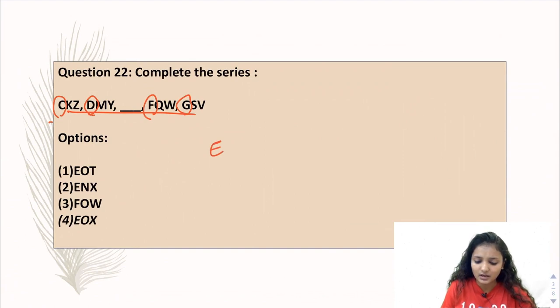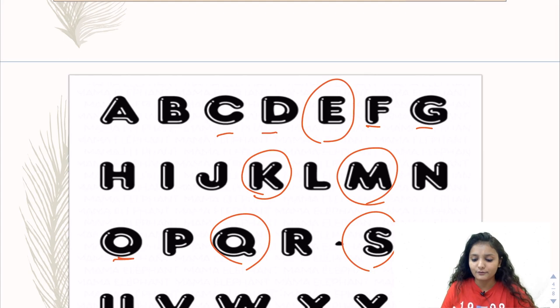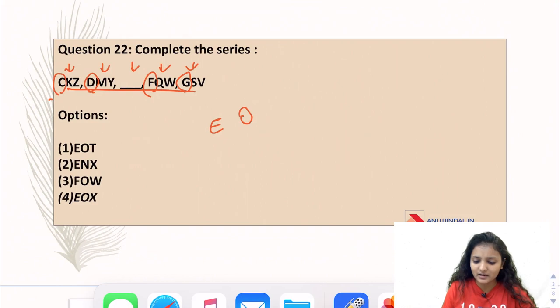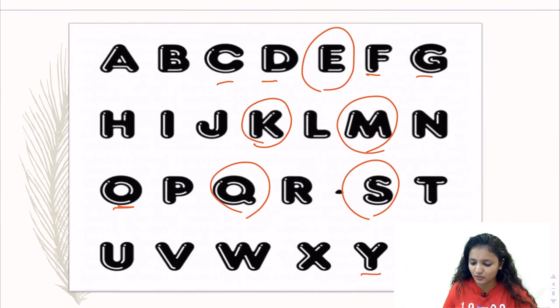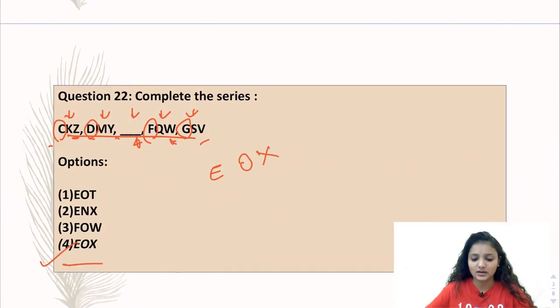Next, you can see KM-QS. So the dashes should be O, then Q, then S. So here you will put O. Then you have Z, Y-W, V. You can see Z, Y-W, V - this is in reverse order. So the missing one is X. Your answer is E-O-X, option number 4.